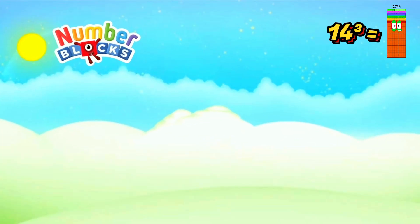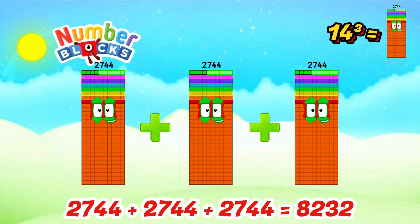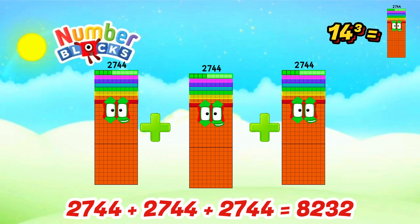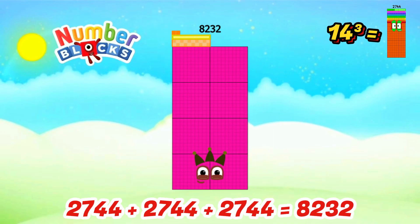Cube of 14 is 2,744. When we add 2,744 three times, the answer is 8,232. Amazing!